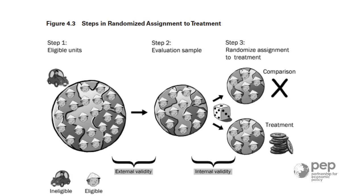This is what this chapter is all about: how to do a randomized control trial. There is a clear procedure that you need to respect if you want to say that you are doing a randomized evaluation. If you didn't do anything systematic to choose the individuals that participate in your evaluation — just people enrolled into your program and that's what happened — then your evaluation is not random at all.